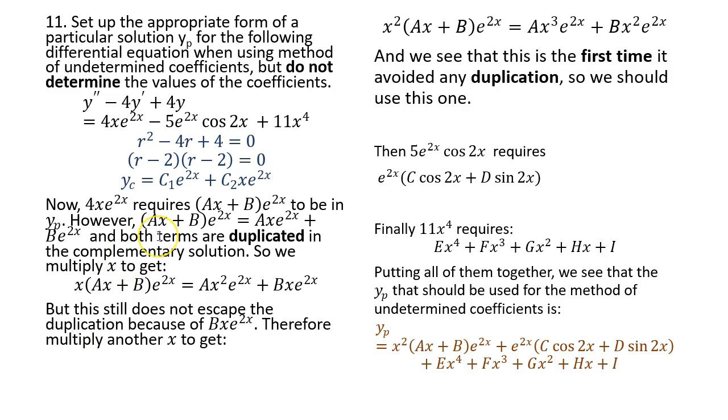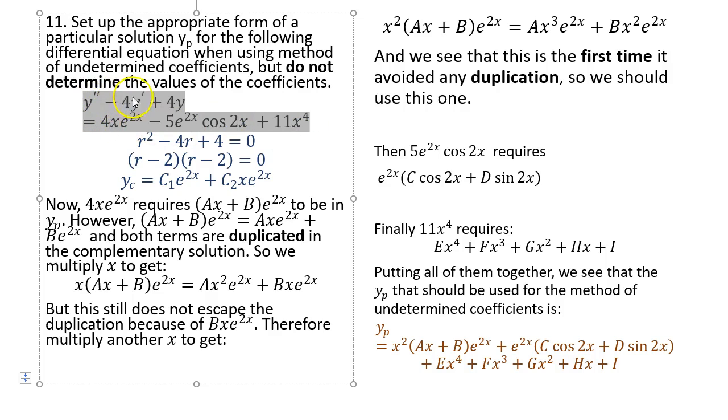Number 11: Set up the appropriate form of a particular solution yp for the following differential equation when using the method of undetermined coefficients. But do not determine the value of the coefficients. So basically you're given this differential equation. You solve such a non-homogeneous differential equation by first figuring out a particular solution, and then figure out the complementary solution, and add the two together to get the general solution. When you find the yp, one effective method is this method of undetermined coefficients. It's basically like this: If you need this, you include that in your yp.